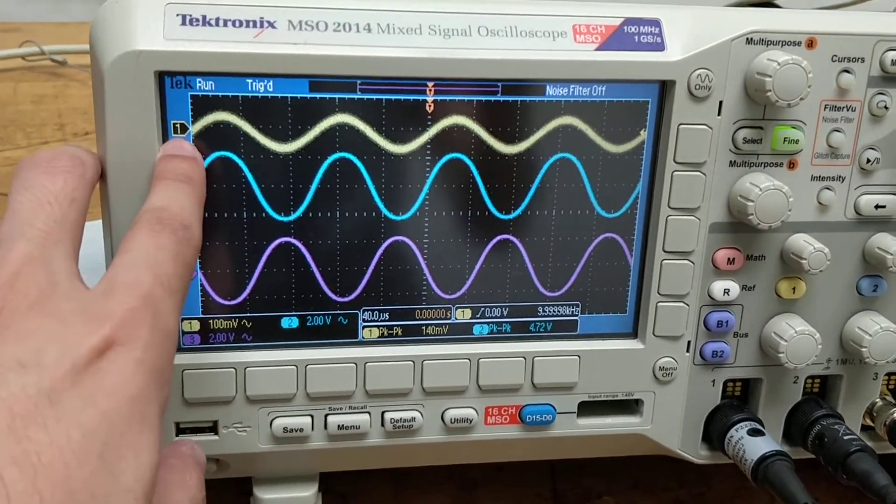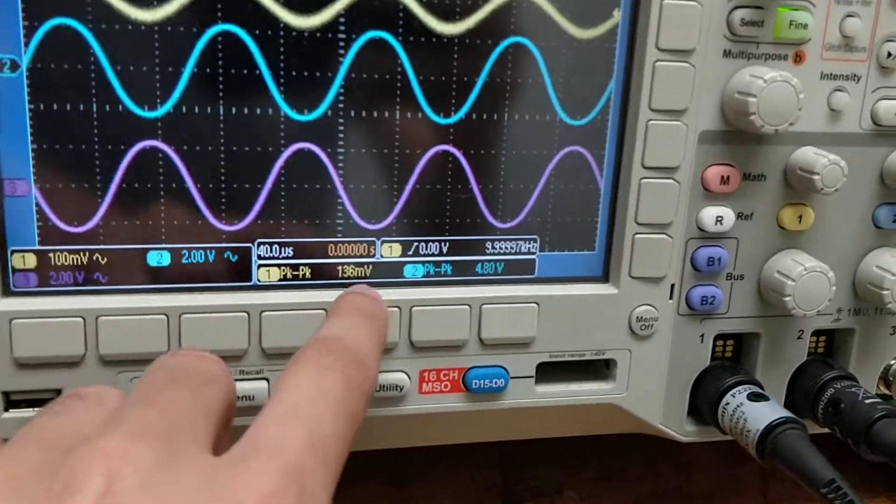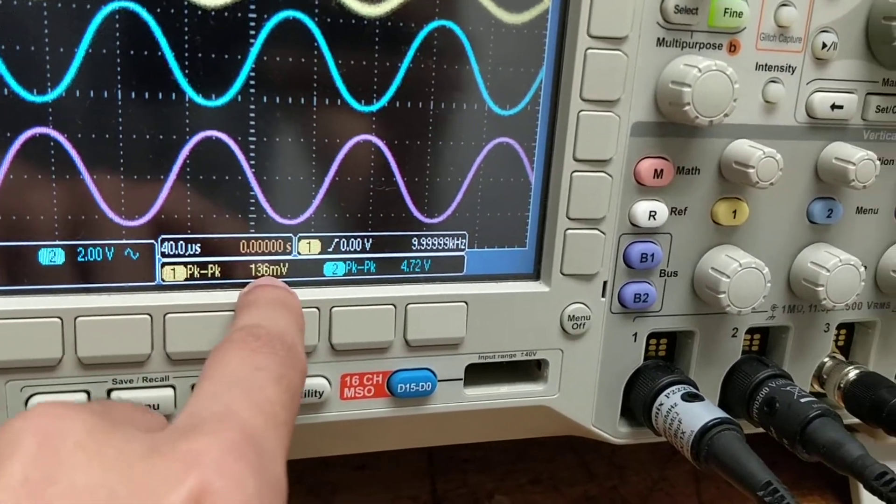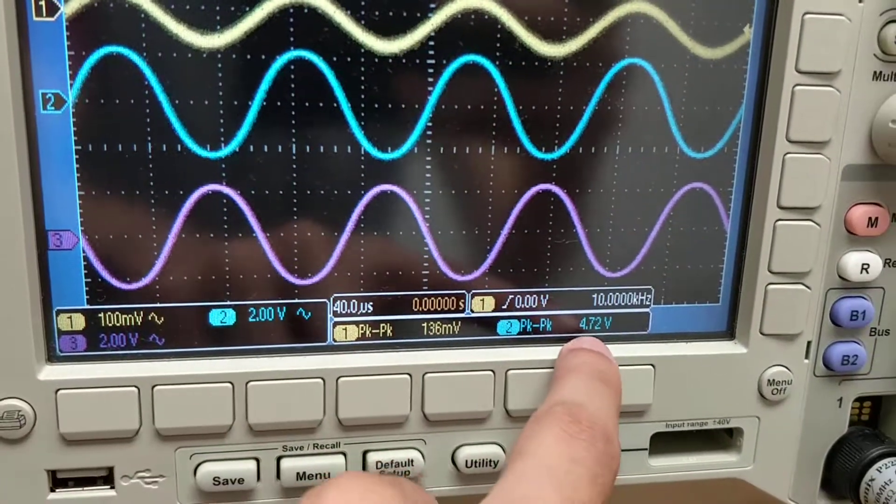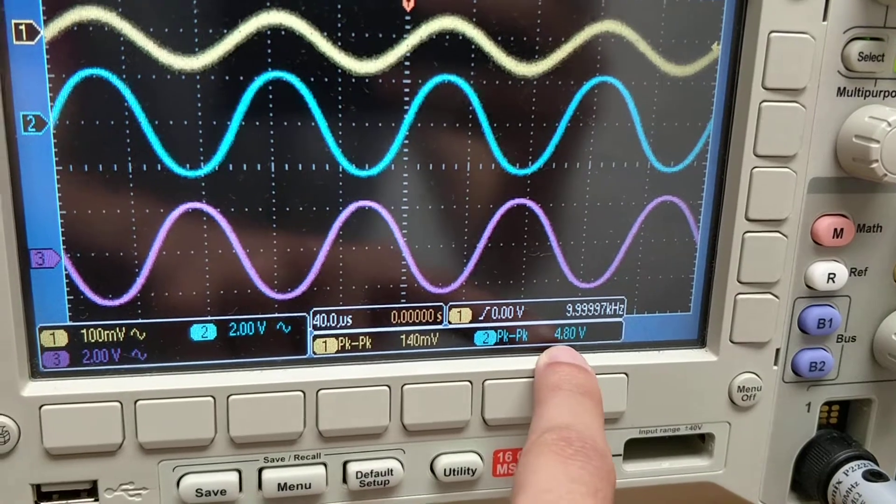Here we have the input, a small sine wave. It is only 136 millivolts and then the output is, my output here, is 4.8 volts peak to peak.